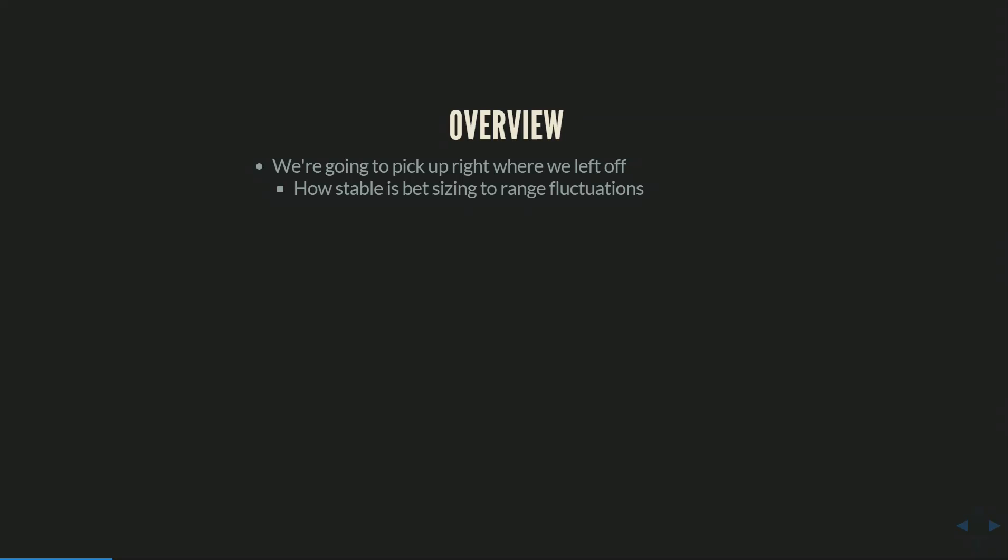For example, instead of cutoff versus big blind in a three-bet pot, we'll look at button versus big blind in a three-bet pot. This analysis will let us look at generally similar range structures — the cutoff and the button would both four-bet the very top of their range, so that part's missing from their range, whereas it's not missing from the big blind's range.